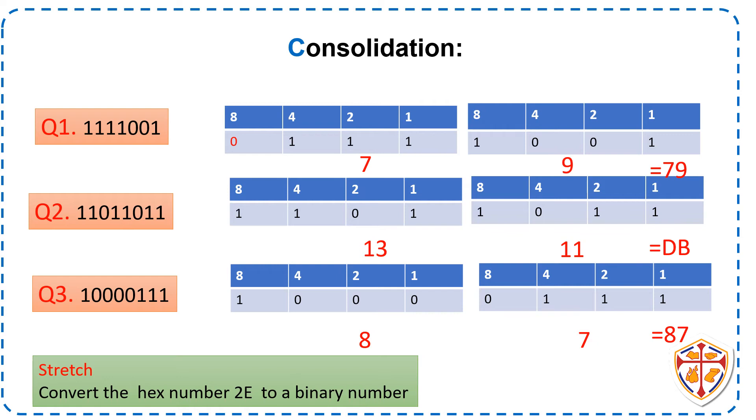So we split our 8 bits into 2 nibbles and then we add the weights of each nibble. Nibble 1. We added 4 plus 2 plus 1. We got 7. Nibble 2. 8 plus 1. We got 9. Put our answers together. 7 and 9. 79.